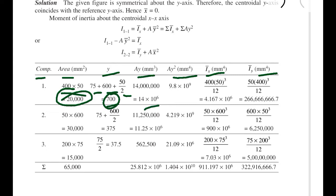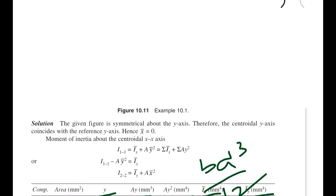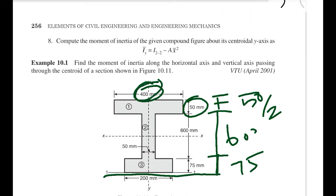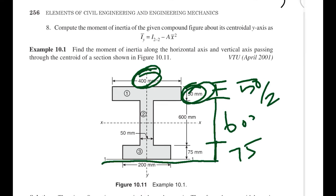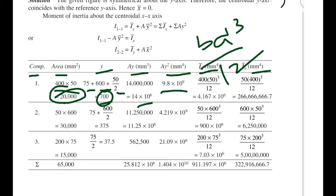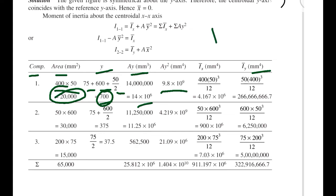The Ay² value for the first component is 20,000 × 700² = 9.8 × 10⁹. The Ix value is bd³/12 = 400 × 50³/12. The Iy value is db³/12 = 50 × 400³/12.